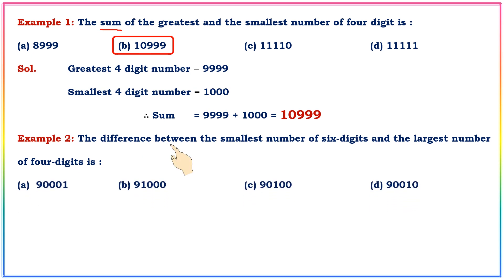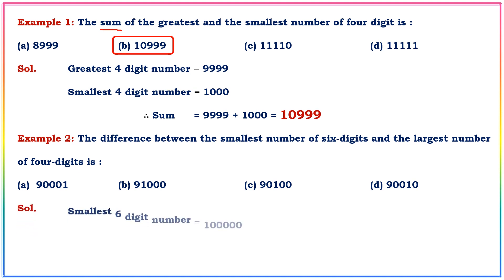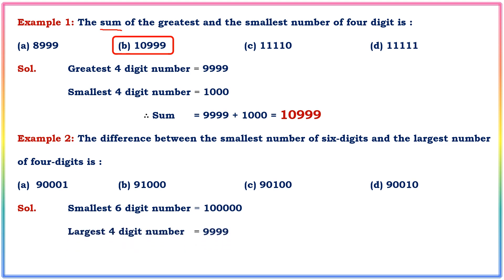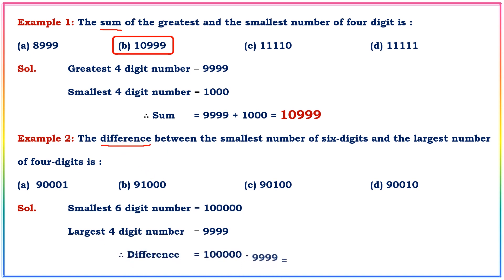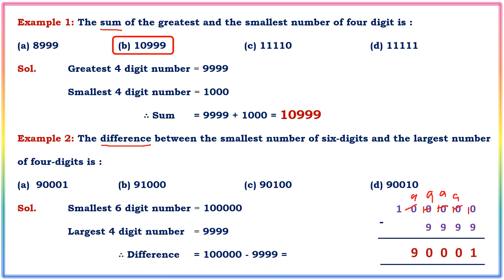Next question: the difference between the smallest number of six digits and the largest number of four digits. The smallest six-digit number is 100000 and the largest four-digit number is 9999. The difference is 90,000. So option A is the correct answer.